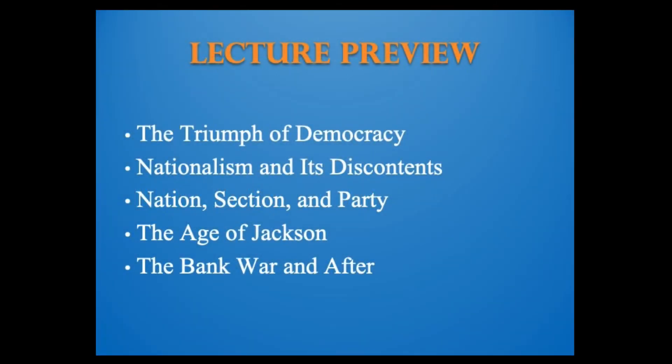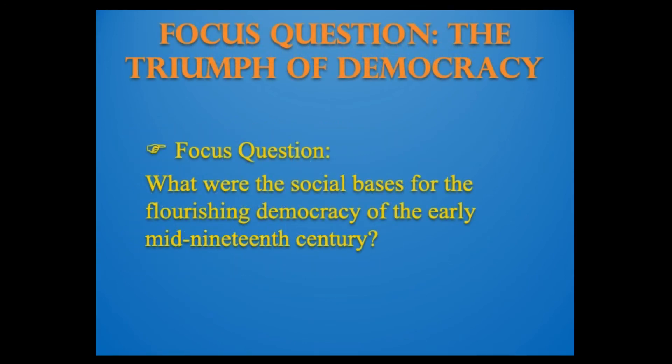We'll be splitting this lecture of chapter 10 into five different sections: the triumph of democracy, nationalism and its discontents, nation, section and party, the Age of Jackson, and the bank war and after. We'll start with the first section, the triumph of democracy. The focus question here is: what were the social bases for the flourishing democracy of the early to mid-19th century?